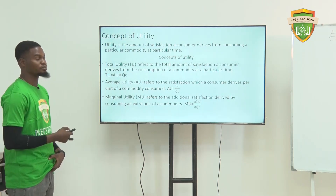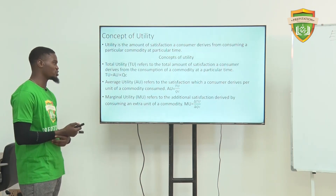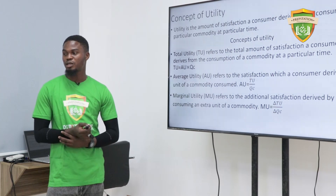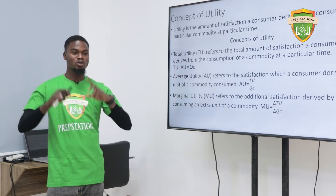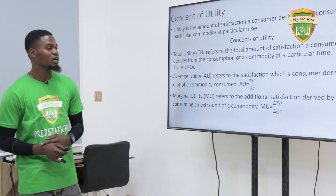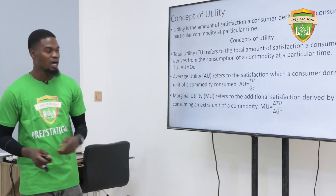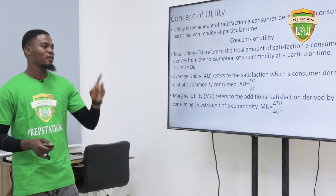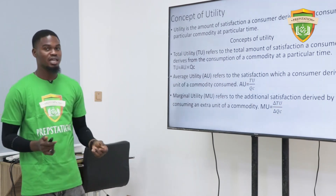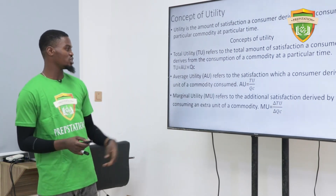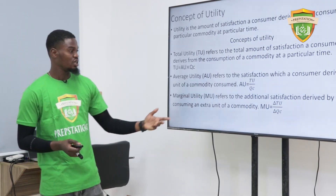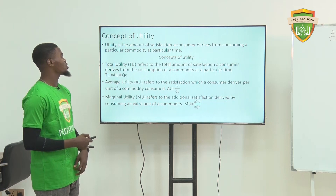Then we come to the concept of utility. Utility has to do with the amount of satisfaction a consumer derives from consuming a particular commodity at a particular time. We have three concepts of utility: total utility, which is the total amount of satisfaction gotten from consuming a given amount of a commodity; average utility, which is the satisfaction per unit of commodity consumed; and marginal utility, which refers to the additional satisfaction derived by consuming an extra unit. The formula for marginal utility is the change in total utility divided by change in quantity consumed.